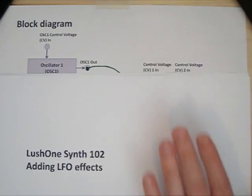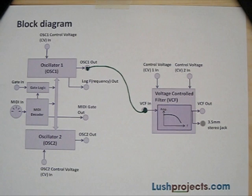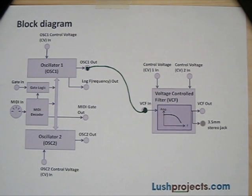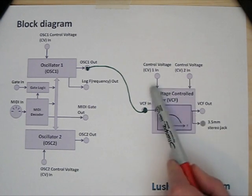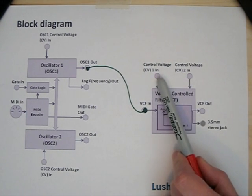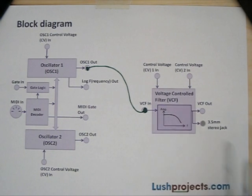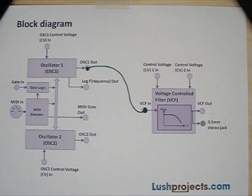I want to talk about the new capabilities by looking at the computer animated block diagram first. So far we've used Oscillator 1 as a direct input to the filter, and today we're going to use two new features: the control voltage inputs and the second oscillator, Oscillator 2, to drive those.